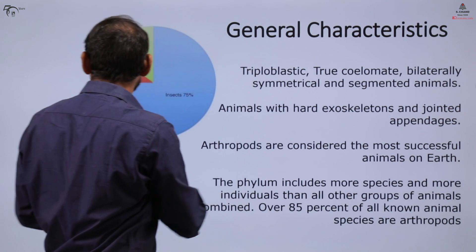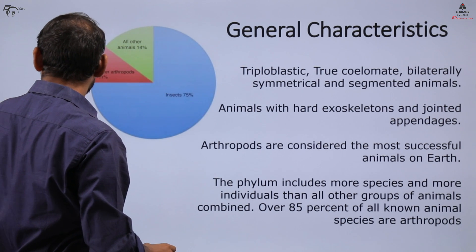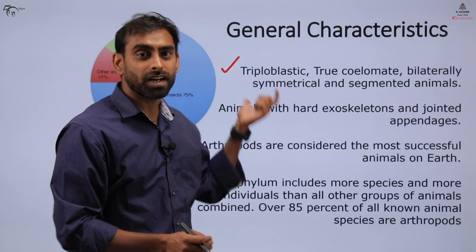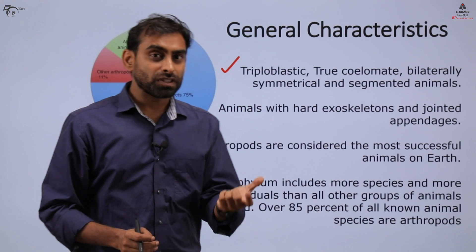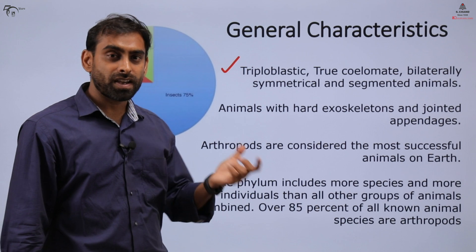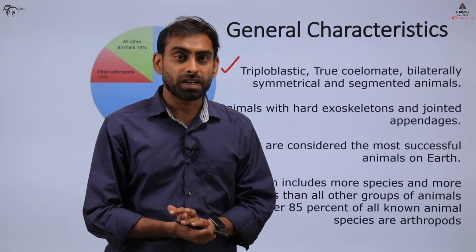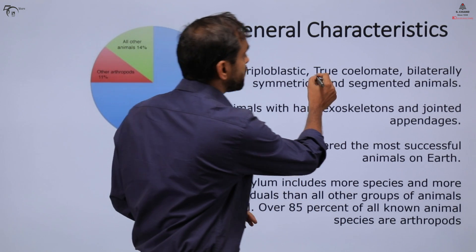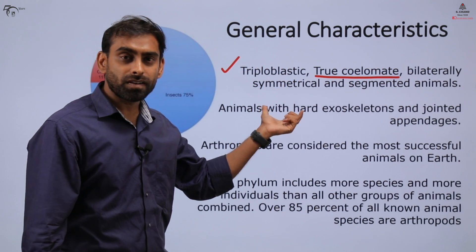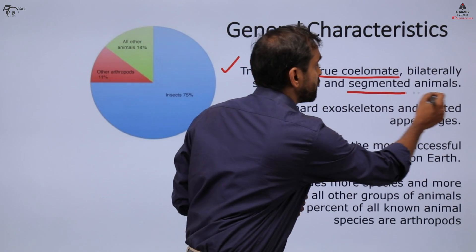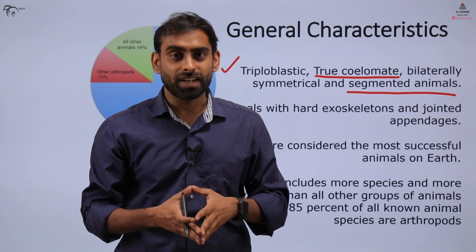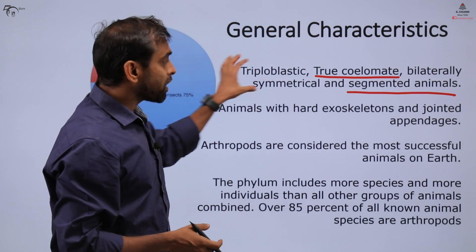First we will look at the general characteristics of Phylum Arthropoda. These basic features are also seen in other previously studied phyla — just as Aschelminthes were triploblastic and Annelids were triploblastic, Arthropods are also triploblastic, meaning they have three basic germ layers. At the same time, they are also true coelomates and they are bilaterally symmetrical.